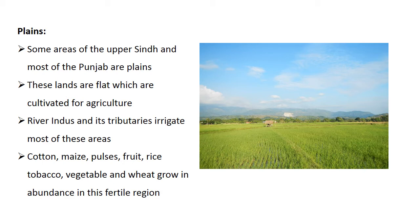Some areas of upper Sindh and most of Punjab are plains, which are flatlands cultivated for agriculture. The River Indus and its five tributaries irrigate most of these areas. Crops such as barley, cotton, maize, fruit, rice, tobacco, and many vegetables grow in abundance in this fertile region.